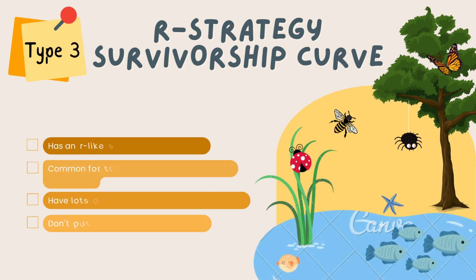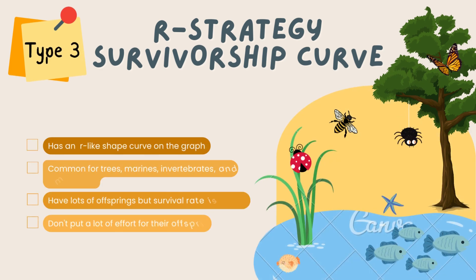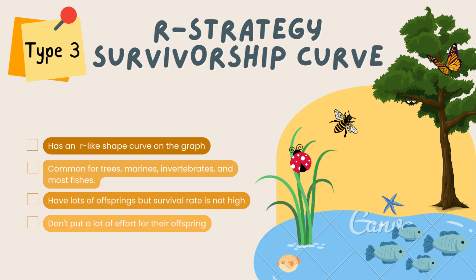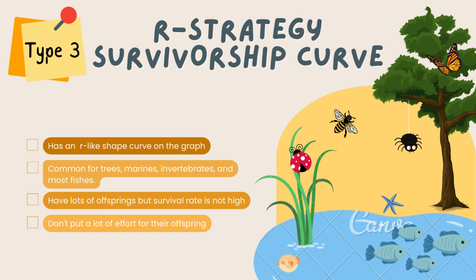Type 3, the R-strategy survivorship curve, has an R-like shape curve on the graph. This type is common for trees, marine invertebrates, and most fishes. Unlike the two other types, organisms under these have lots of offsprings, but the survival rate is not that high. Only a few offsprings survive through their youth, but those few that do tend to have quite long lives. Another difference is that organisms under this type don't really invest a lot of effort in providing for their offsprings.